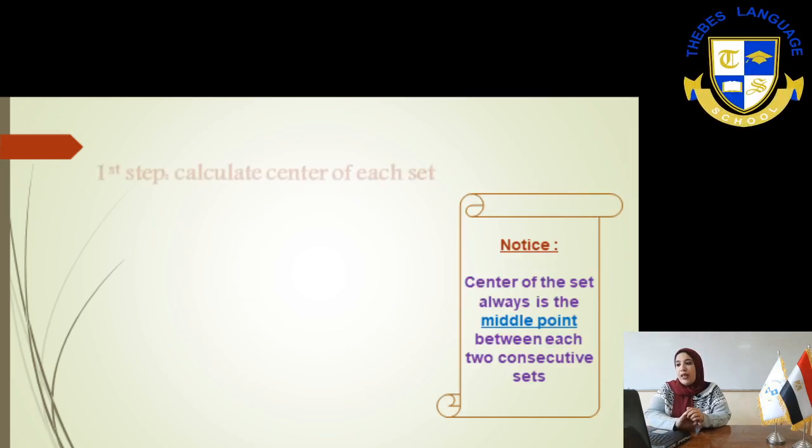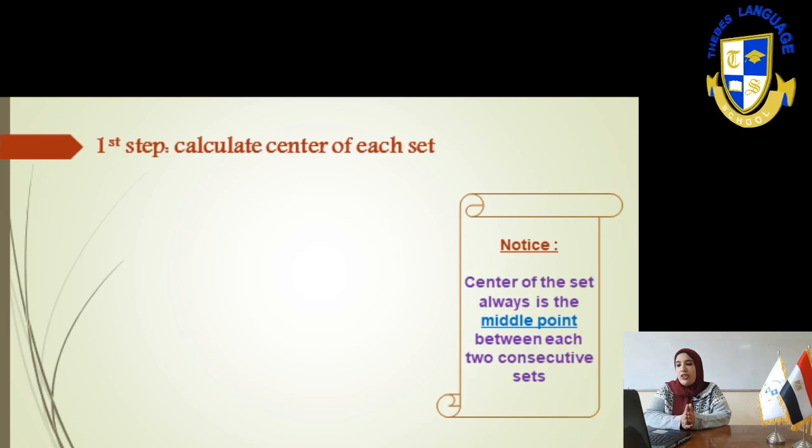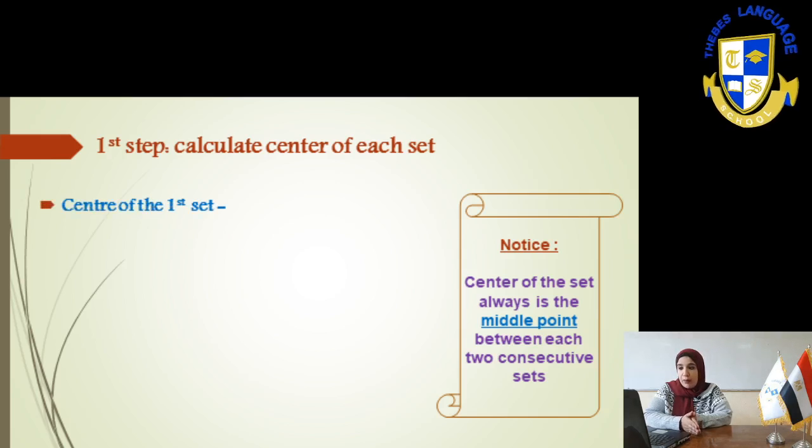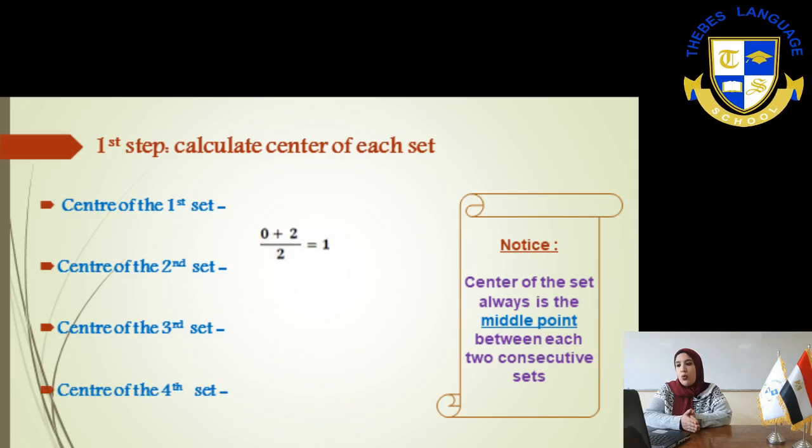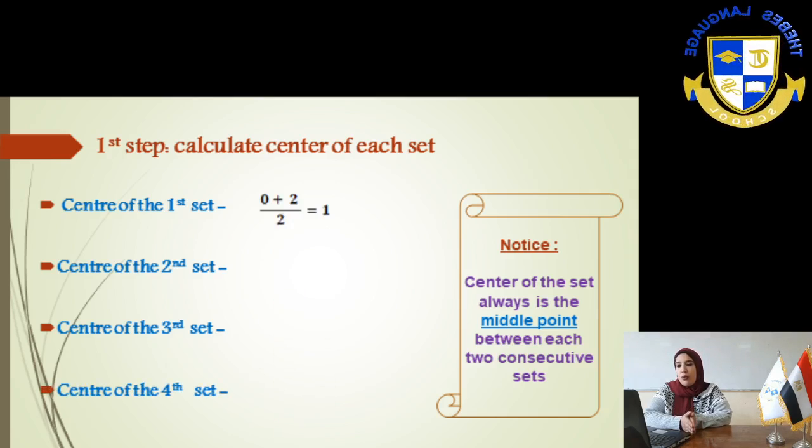Number 1, calculate the center of each set. The first set from 0 to 2, lower limit plus upper limit over 2, 0 plus 2 over 2, the answer will be 1.